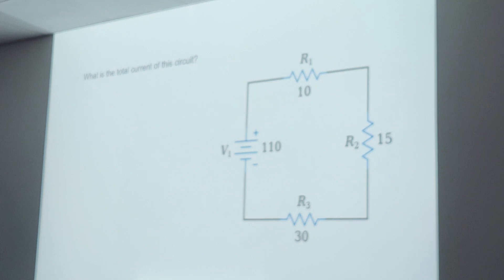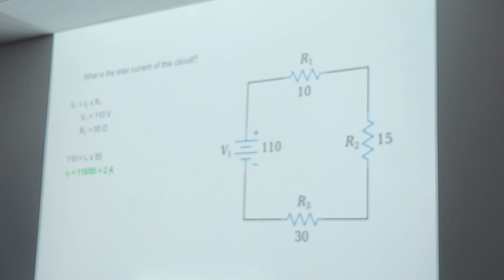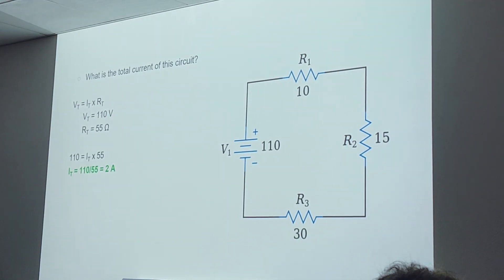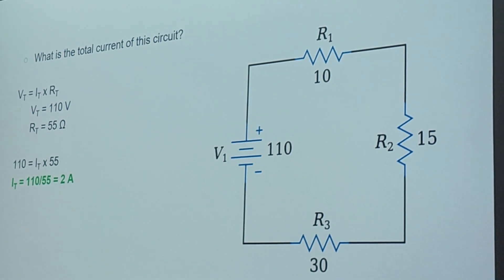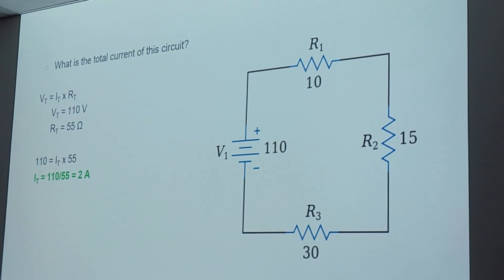What is the total current in this circuit? We know it's going to be the same across. Using the formula V equals IR, we plug in the numbers: 110 divided by 55 gives us a total current of 2 amps. The resistance is 55 because we added it up, and then we plug it into our formula. So 2 times 55 equals 110, which is the voltage.